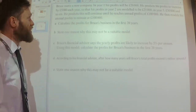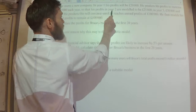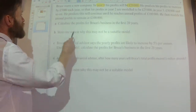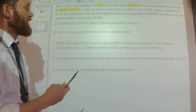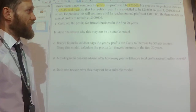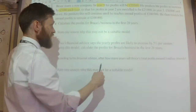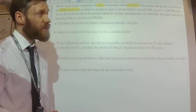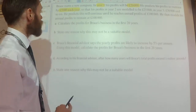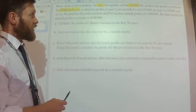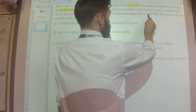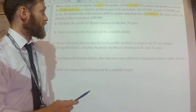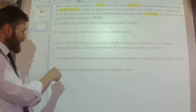We are told that Bruce starts a new company. In year one, his profits will be £20,000. He predicts that his profits are going to increase by £5,000 each year, so that his profits in year two are modelled to be £25,000, in year three £30,000, year four £35,000, and so on. So we have an arithmetic sequence — it is going up by £5,000 every single year. He predicts this will continue until he reaches annual profits of £100,000, and then models his annual profits to remain at £100,000.